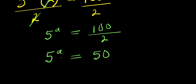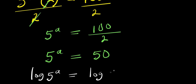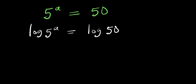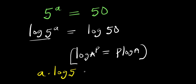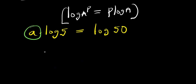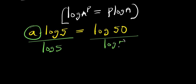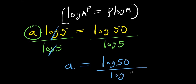So we can apply log in order to solve for a. log(5^a) = log(50). Now if you have log(a^b) = b × log(a), so log(5^a) will be the same thing as a × log(5) = log(50). And from here, I can isolate a by dividing both sides by log(5), so this eliminates this.